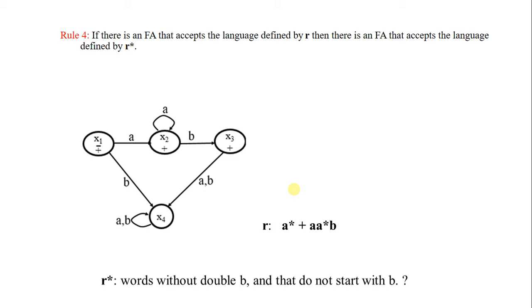We are going to prove rule number four of Lemma three of the Kleene theorem. This rule says: if there is an FA for R1, then there is also an FA for R1 star. So if you can do an FA for a start, the key point here is...